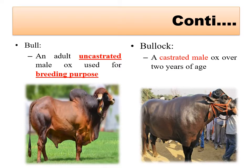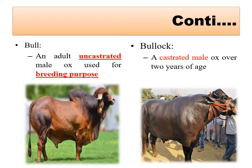Uncastrated means the animal on which castration has not been performed - it is able to reproduce. A bullock is a castrated male ox over two years of age used for draft or agricultural work. Always remember: for bull, write uncastrated; for bullock, write castrated male.